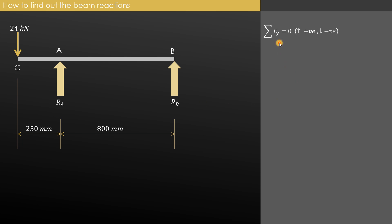The first condition we are applying is summation of forces in the y direction equals 0. Upward forces are considered positive and downward forces are considered negative. Ra and Rb are acting upward so they are positive, whereas 24 kN acts downward so it is negative. Therefore Ra plus Rb equals 24 kN — that is our first equation.